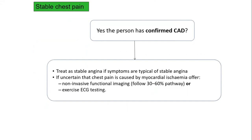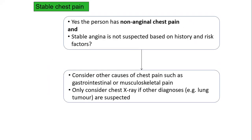If somebody has confirmed coronary artery disease but it is uncertain whether it is angina or not, the next step is to do non-invasive functional imaging, or exercise ECG testing in places where non-invasive functional imaging is not available. If the person has non-anginal chest pain and stable angina is not suspected, we have to consider other causes — like GI or musculoskeletal pain — and probably take a chest X-ray.